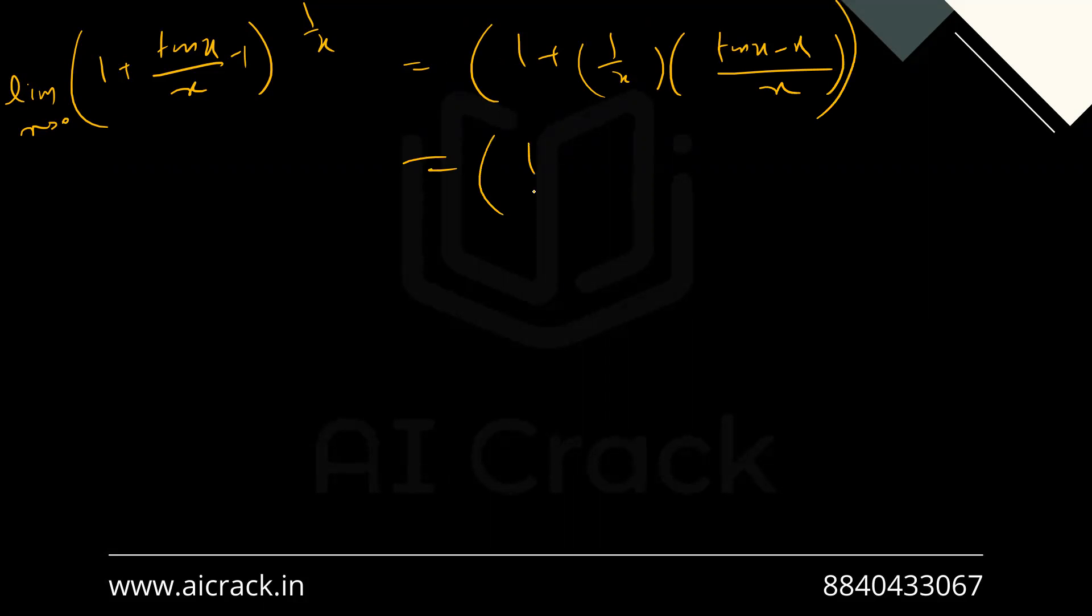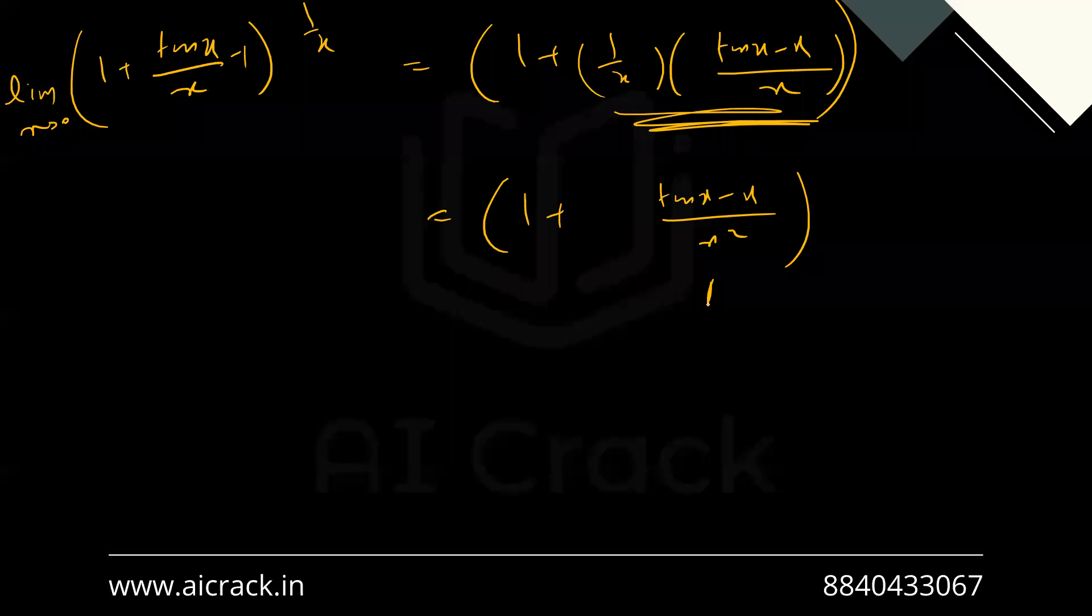So this limit is existing. Basically we have to calculate this limit only. So we can write it as equals to 1 plus tan x minus x divided by x squared here. So this limit is existing and we have to just calculate this one if this is existing or not.